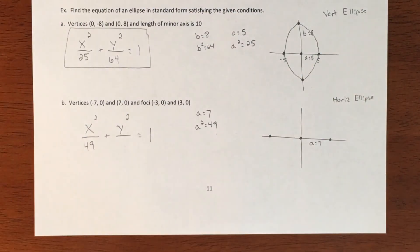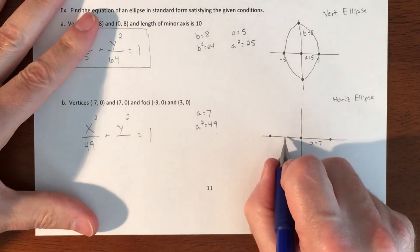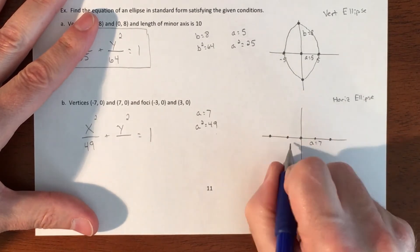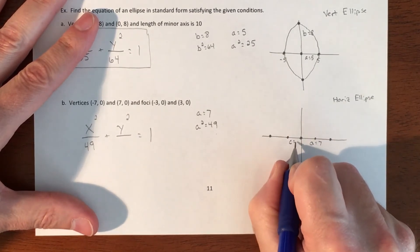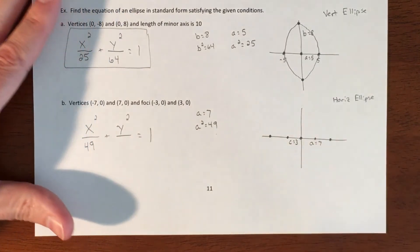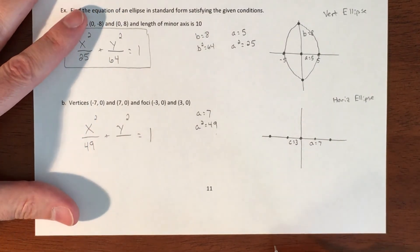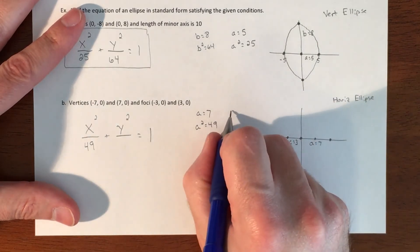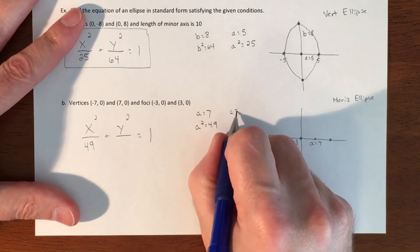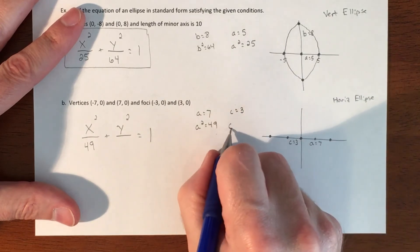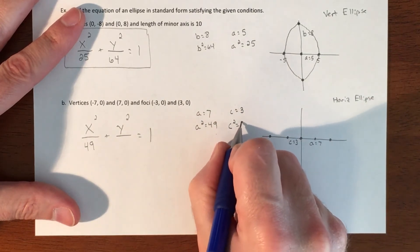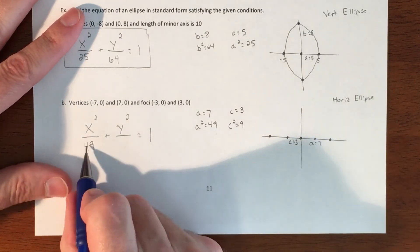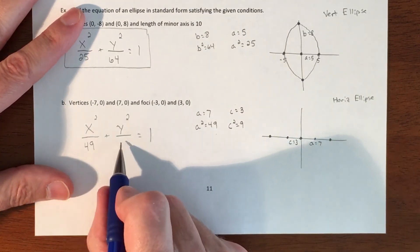The focal points are at (±3, 0), so that is a c value. If c is 3, that means c squared is 9. That means the difference between these two denominators should be 9.